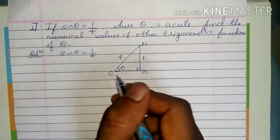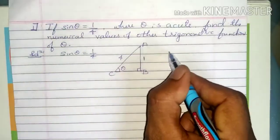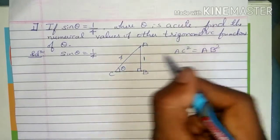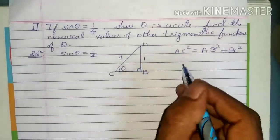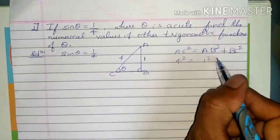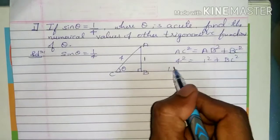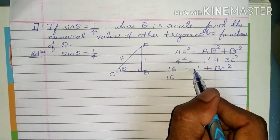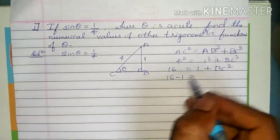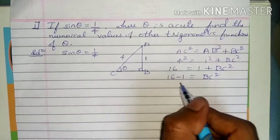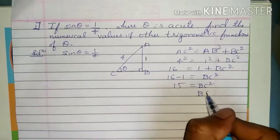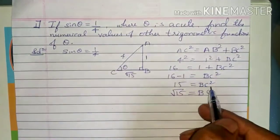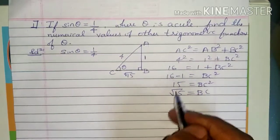Using the Pythagoras theorem, we have to find BC. According to Pythagoras theorem, AC squared equals AB squared plus BC squared. AC is 4, so 4 squared equals 1 squared plus BC squared. That gives 16 equals 1 plus BC squared. Bringing 1 to the left hand side: 16 minus 1 equals BC squared, so 15 equals BC squared, and BC equals root 15.